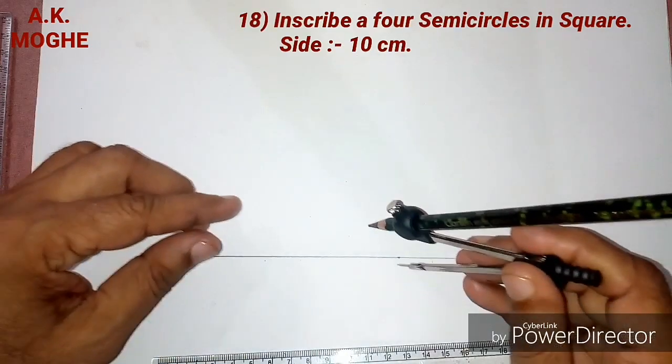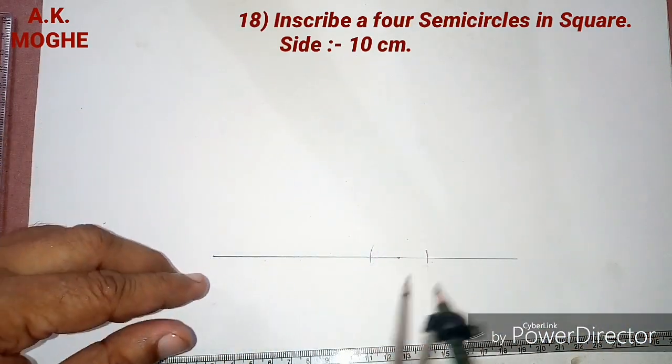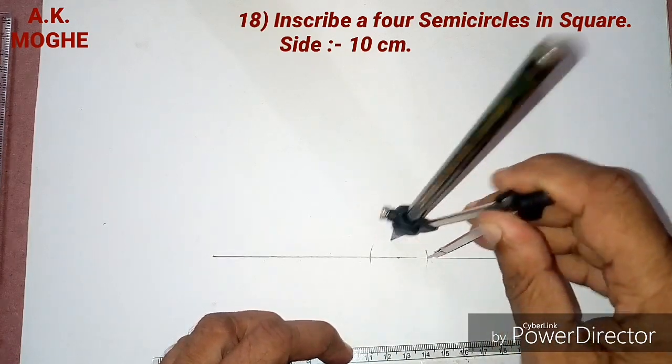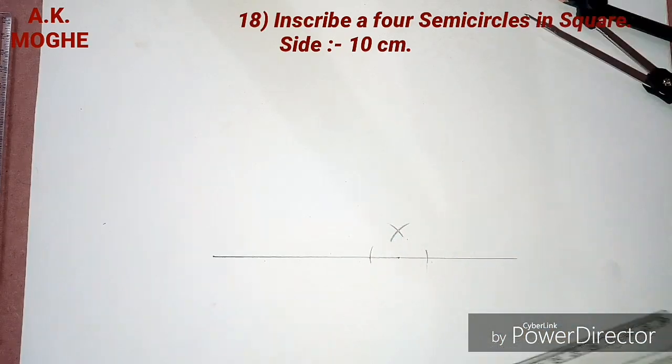Here we are drawing a square with a 10 cm side. The procedure to draw a square is well known up till now. Here we are taking one point on the line and drawing a perpendicular as one side of the square.